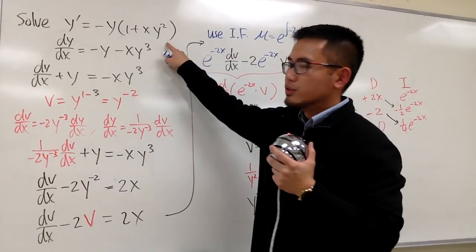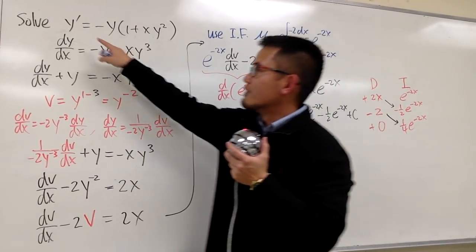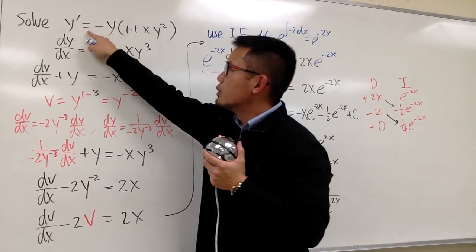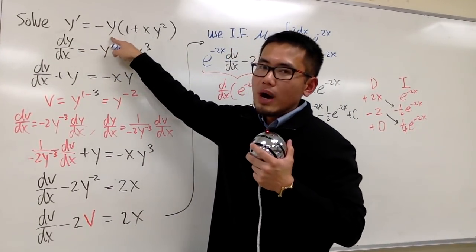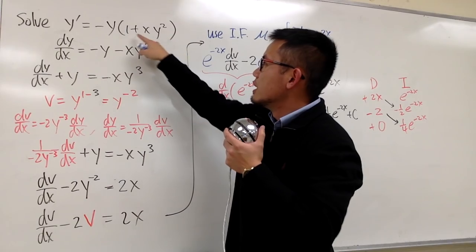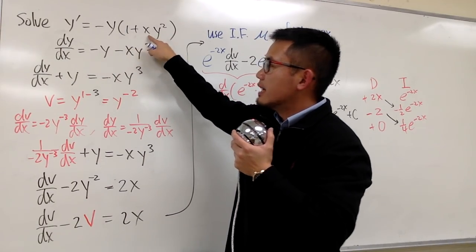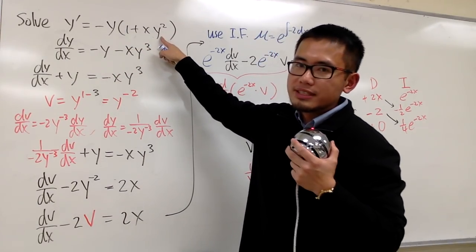We're going to solve this differential equation. We have y' is equal to negative y times the parentheses, with 1 plus x times y squared inside.